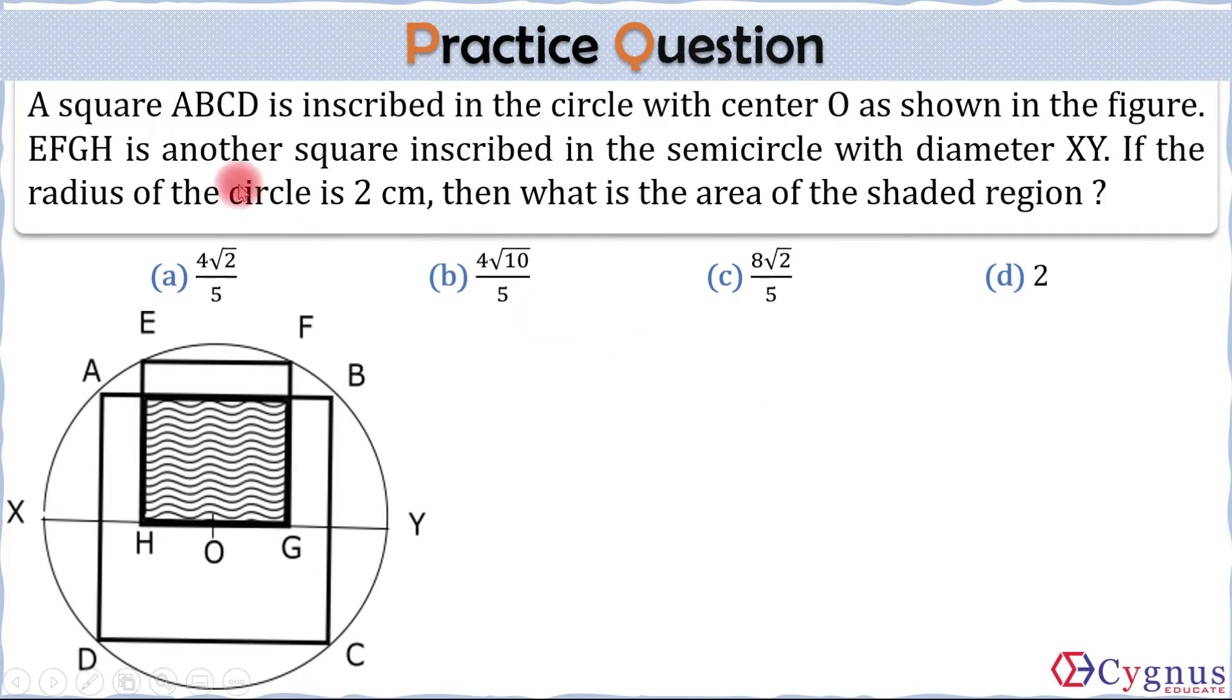Okay, so let's look at this question. A square ABCD is inscribed in the circle with center O as shown in the figure. So the bigger square is ABCD. And EFGH is another square which is inscribed in the semicircle with diameter XY. So XY is the diameter. XAEFBY is a semicircle and EFGH is a smaller square. And what we have to do is we have to calculate the area of the shaded region.